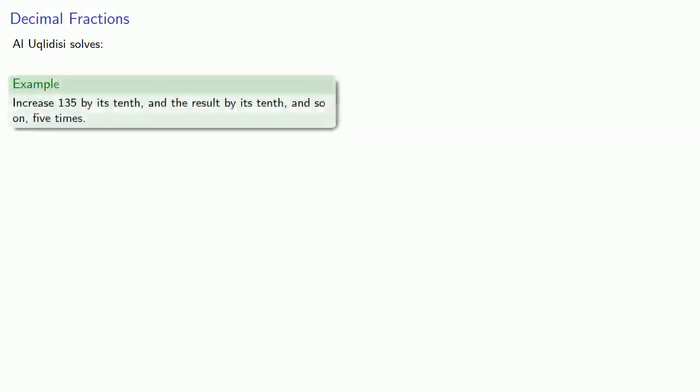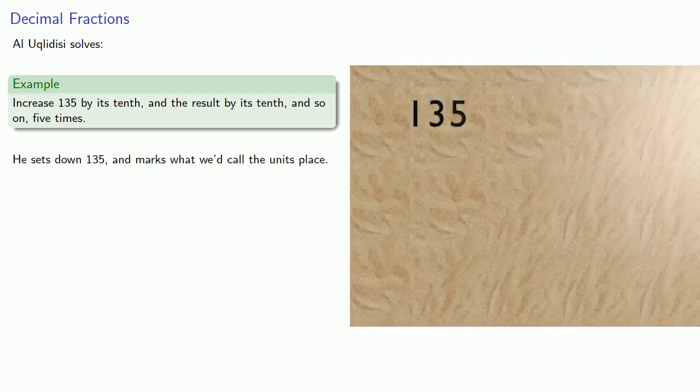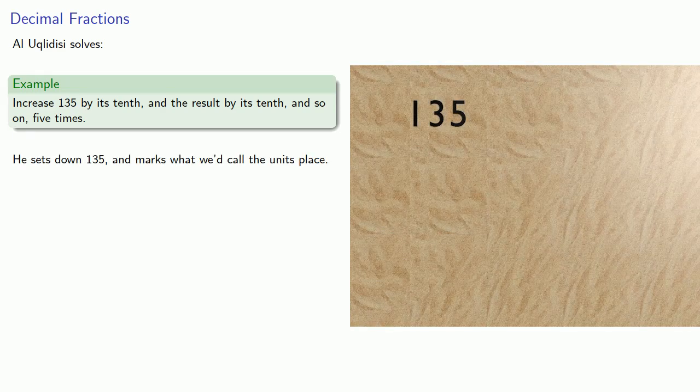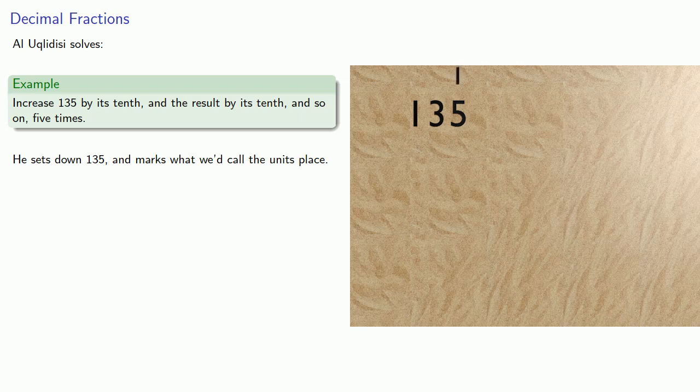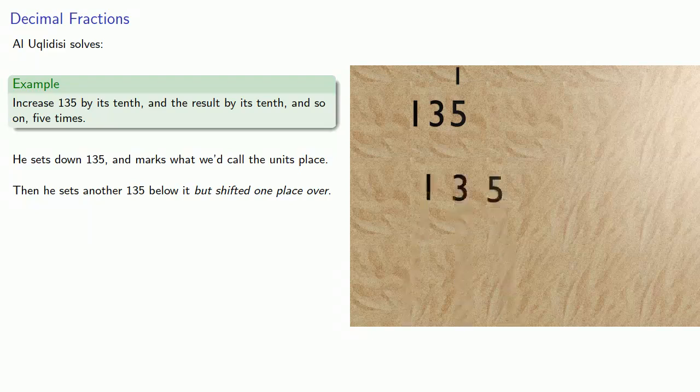And among other things, al-Uklidisi solves the problem: increase 135 by its 10th, and the result by its 10th, and so on, 5 times. So to do this, he sets down 135, and marks what we call the units place. Then he sets another 135 below it, but shifted 1 place over.